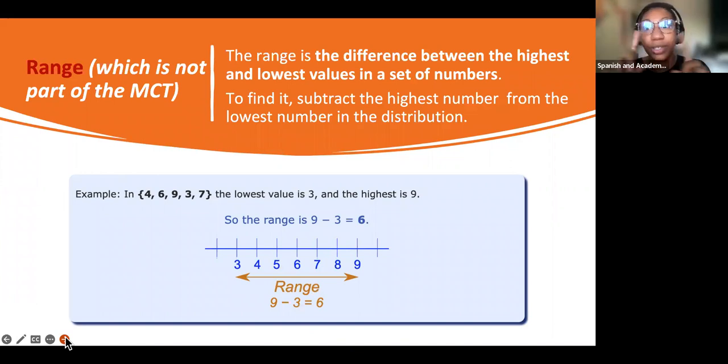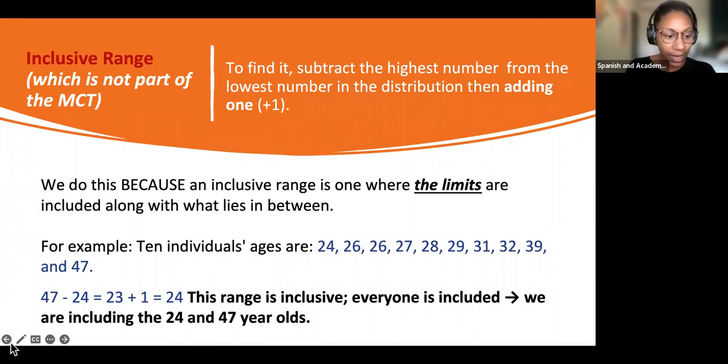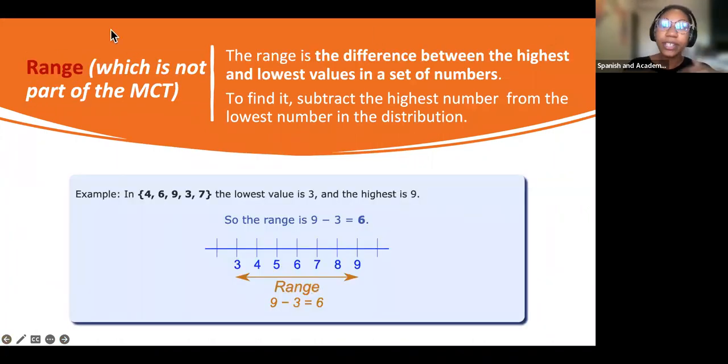Moving on to the range, which is not a measure of central tendency. The range is the difference between the highest and the lowest values in a set of numbers. To find it, you subtract the highest number from the lowest number in the distribution. Here's an example of a number range. The highest is 9. The lowest is 3. Nine minus 3 is 6. You can count that on your fingers. This is an example of what you might see in the exam, but it's important to note that the range is not a measure of central tendency.